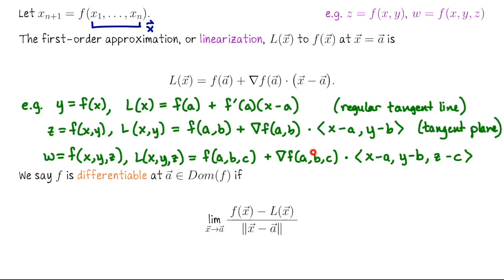Anytime the gradient of f exists, we can write down the linearization to our function at the point in question. However, if f is a function of multiple inputs, the ability to write down these equations does not give us that f is differentiable. Because again, your partial derivatives can exist at a certain point even if the function is not well behaved at that point. So here's the idea of differentiability: we say that such a function f is differentiable at a point in its domain if the limit as we approach that point of f of x minus L of x divided by the length of the vector x minus a exists — in fact, it goes to zero.